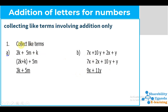They are just telling us to collect the like terms. Here they give you numbers of different kinds. For example, we have been given K, M, and K again. The first step is to identify the numbers that look alike — isolate them and put them together. Then isolate those numbers that do not resemble and put them aside.